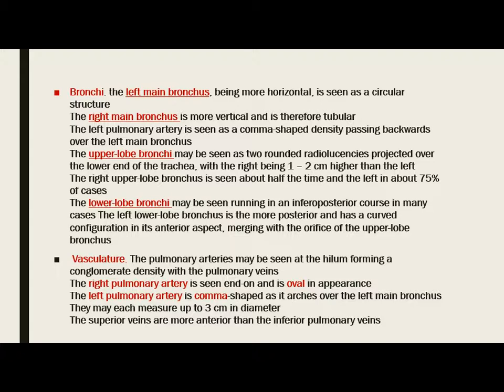The upper lobe bronchi may be seen as two rounded radiolucencies projected over the lower end of the trachea, with the right being one to two centimeters higher than the left. The right upper lobe bronchus is seen about 50% of the time, while the left is seen in about 75% of cases. The lower lobe bronchi may be seen running in an inferior posterior course. The left lower lobe bronchus is more posterior and has a curved configuration in its anterior aspect, merging with the orifice of the upper lobe bronchus.